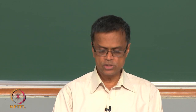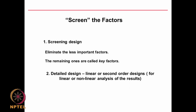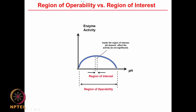Initially you perform a screening design to eliminate less important factors; the remaining factors are called key factors. Then you do a detailed design — linear or second-order — so you can fit a linear or non-linear regression mathematical equation. Another important consideration is operability versus region of interest. For example, with pH versus enzyme activity, the curve is generally bell-shaped. But if you operate within a very narrow pH range like 3.5 to 4, the relationship looks almost linear.